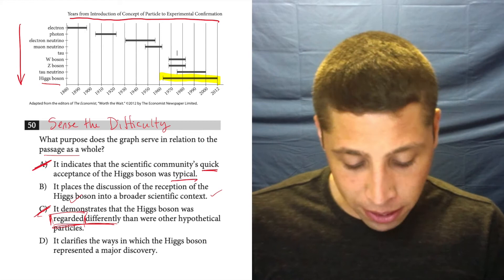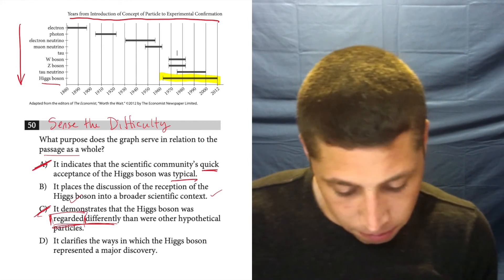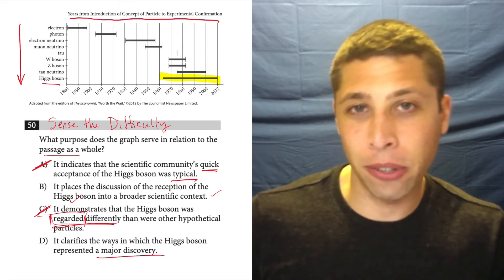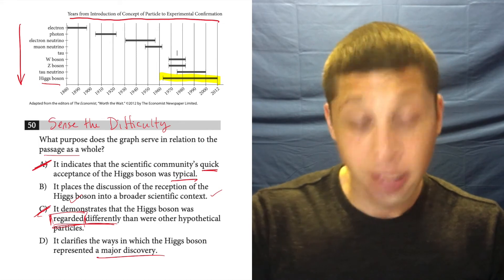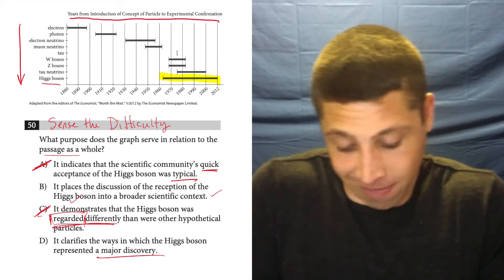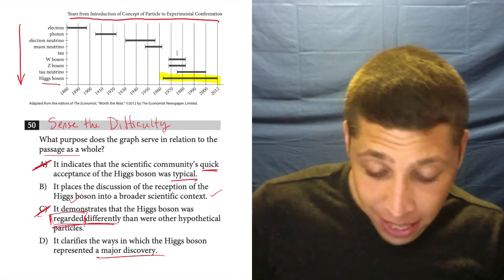D, it clarifies the ways in which the Higgs boson represented a major discovery. Well, how does it clarify it? Turn that into a question. Why was the Higgs boson a major discovery? Can you point to anything on this chart to answer that question? I can't. So this is too subjective. It doesn't say anything on the chart.